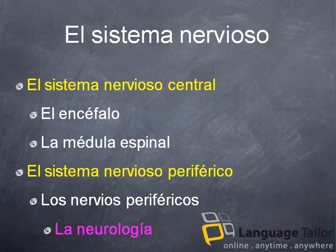El sistema nervioso. Tenemos dos. El sistema nervioso central — ejemplos: el encéfalo, la médula espinal. Y el sistema nervioso periférico — ejemplo: los nervios periféricos. La ciencia: la neurología.